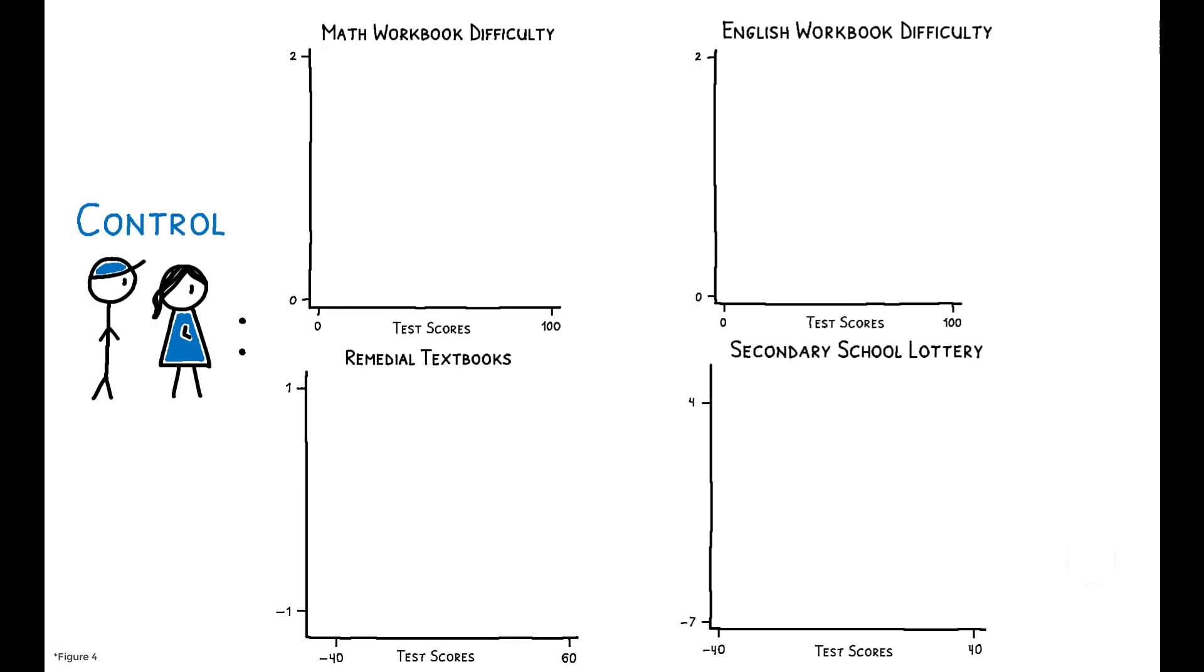These figures show how control parents' decisions vary according to their children's test scores. All are oriented such that we would expect higher levels of investment for higher-scoring children. We see that parents do attempt to match their investments to their children's academic performance. In all cases, investments are positively correlated with believed test scores.